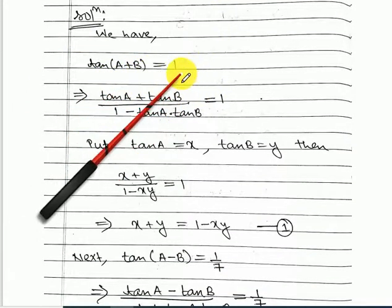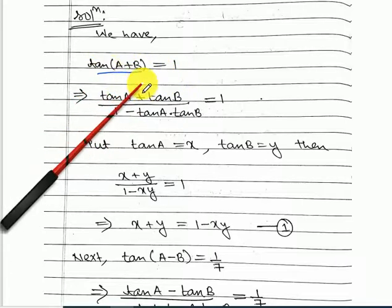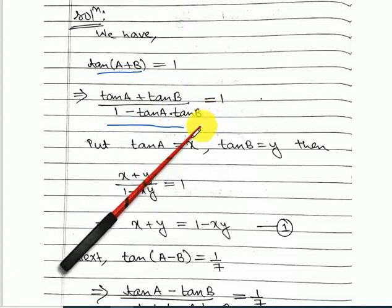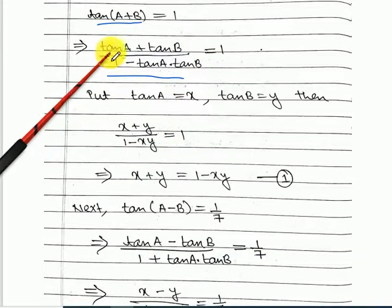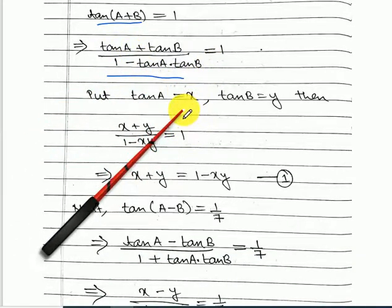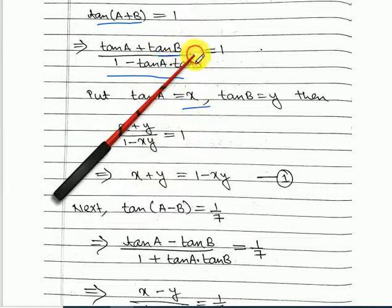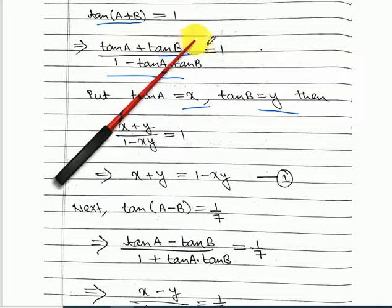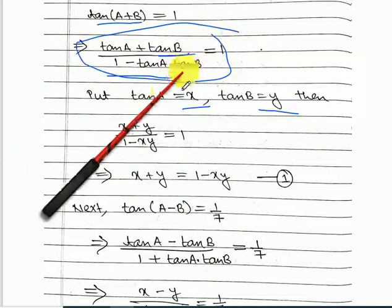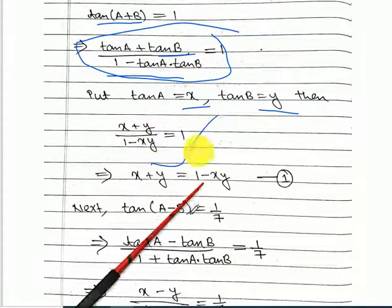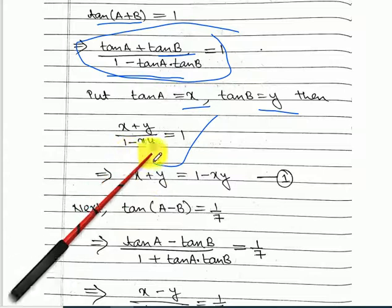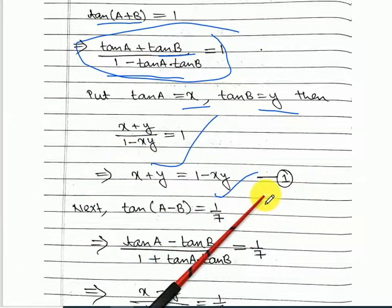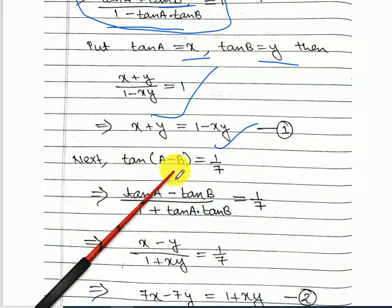We have tan(A+B) equal to 1. When we expand the left hand side we get the expansion formula. We will put x in place of tan A and y in place of tan B. This equation will become a substituted form. Do the cross multiplication and you get equation 1.